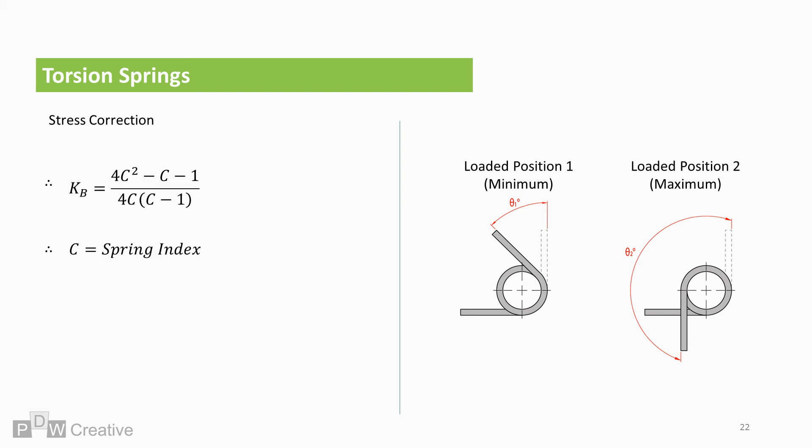Stress correction is 4 times c squared minus c minus 1 over 4 times c times c minus 1. C is basically the spring index. Spring index is mean coil diameter over wire diameter. C ideally needs to be greater than 4 but less than 12. Anything less than 4 is hard to form. Anything greater than 12 is likely to tangle with other springs when boxed during manufacture.